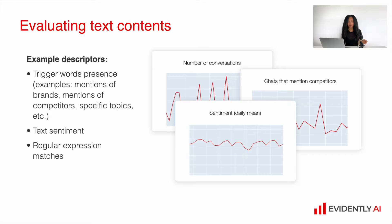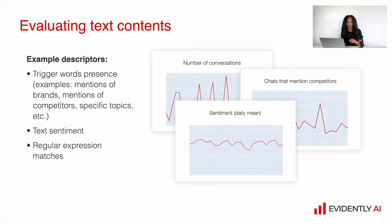For instance, it can be things like trigger word presence — those trigger words can be mentions of specific brands, maybe mentions of competitors, mentions of some specific topics, and so on. You can really build a lot of nice descriptors.